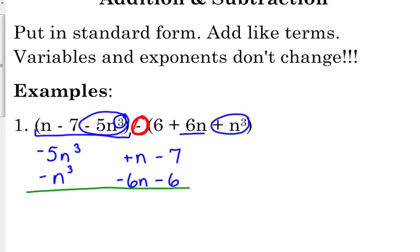So now, at this point, I'm going to add. I'm not subtracting anymore because I already took care of that. I changed all the signs, so now I'm just going to look at it as adding. So negative 5 plus negative 1 is negative 6. The variable part does not change. I only combine the coefficients.